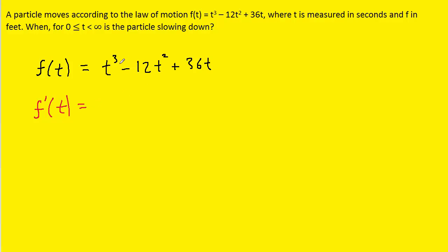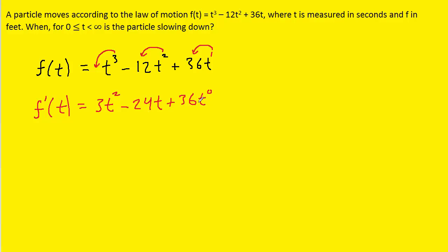The derivative here is relatively straightforward — simple power rules. We can pull the exponent down and subtract 1 to make 3t squared. Same idea here, we multiply by 12, so we get 24t to the first power. This is already t to the first, so we bring that down. That becomes 36t to the 0, but t to the 0 is 1, so we can remove that. So here is our velocity function.